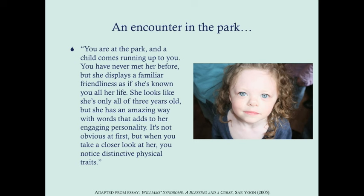You look at this little girl and you might notice a few things: perhaps a bit of a longer philtrum, a very low nasal bridge, and these very mesmerizing eyes. She's got light blue eyes, and if you look really closely, you can see a stellate — a star pattern — to her iris, which is unusual. You can also note the prominent forehead and perhaps a borderline small chin. These are all characteristic facial features of a patient with Williams syndrome.